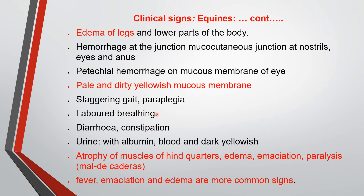There is staggering gait and paraplegia because of the effect on the central nervous system. Labored breathing occurs because of anemia. There is diarrhea and/or constipation. The urine contains albumin, blood, and is dark yellowish in color. There is atrophy of the muscles of the hindquarters, edema of the dependent parts or legs, and emaciation and paralysis in horses. This condition is called Maldicadras in local language. In horses, fever, emaciation, and edema are common signs.